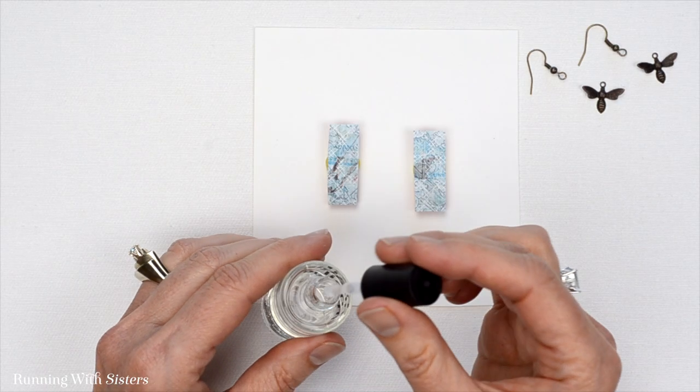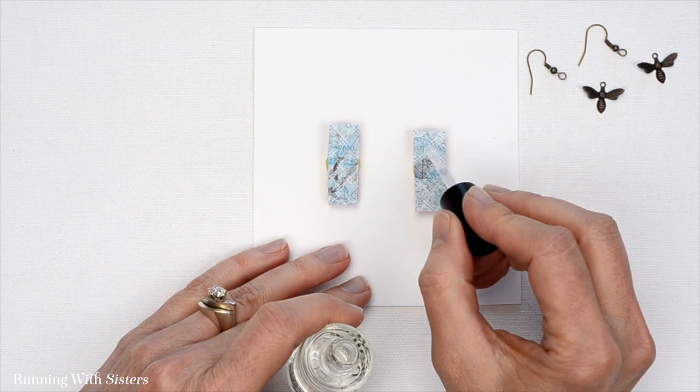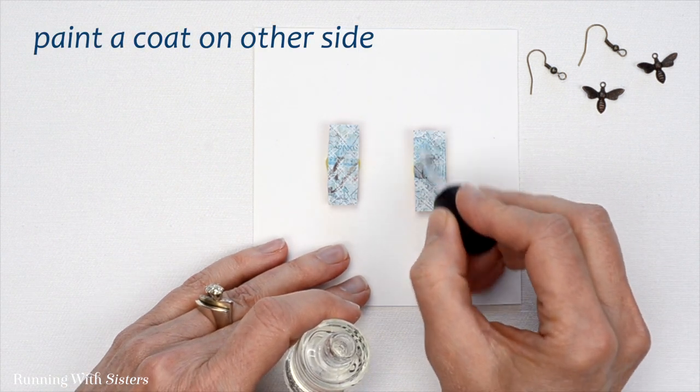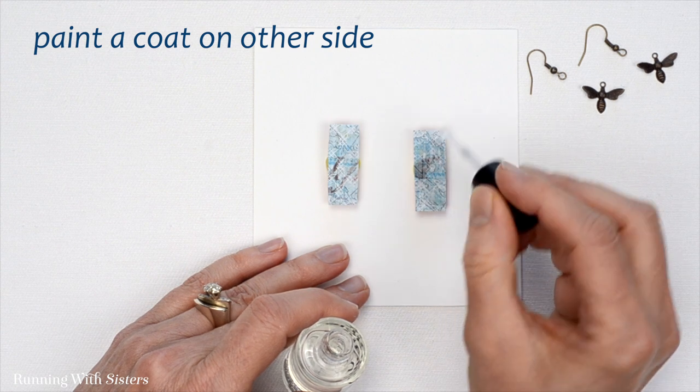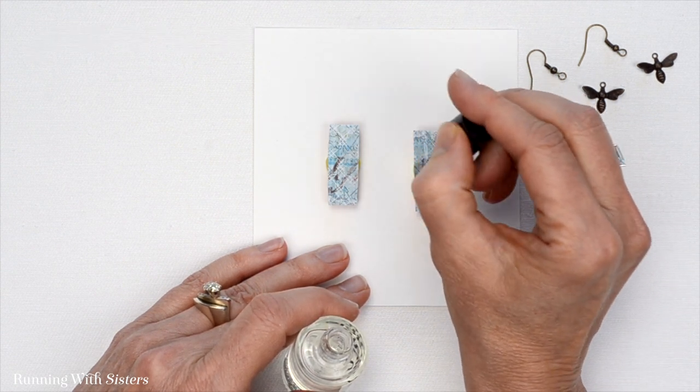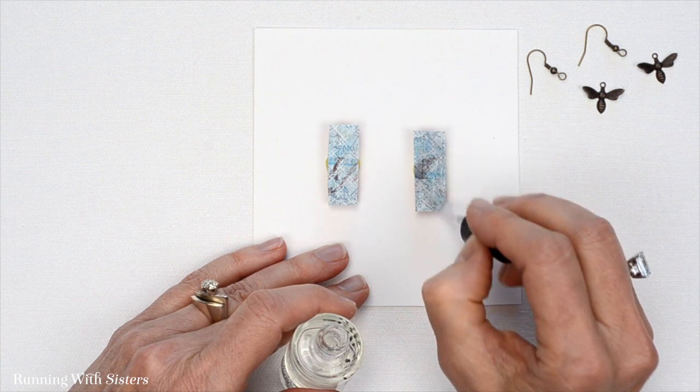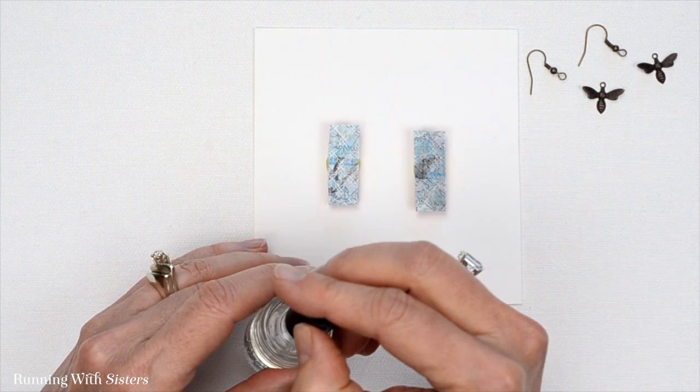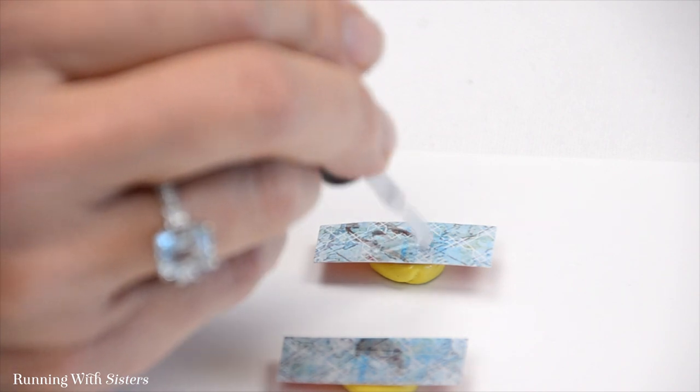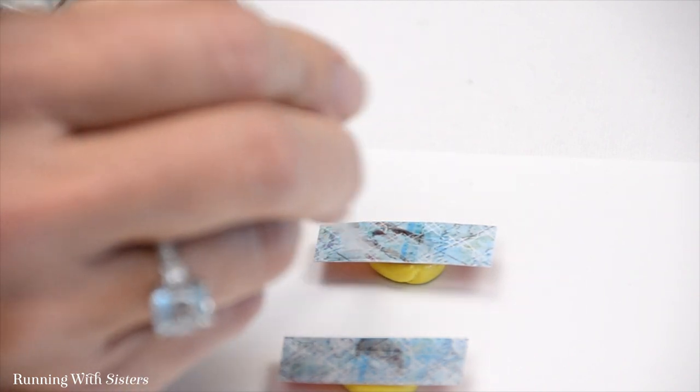I'm just doing the same thing I did on the other side, painting a coat right over the back, making sure I go all the way to the edges. This clear nail polish, another thing it does that's nice is it gives this paper some rigidity. So it's not as likely to get any bends in it as you're wearing them. It just makes them more finished.